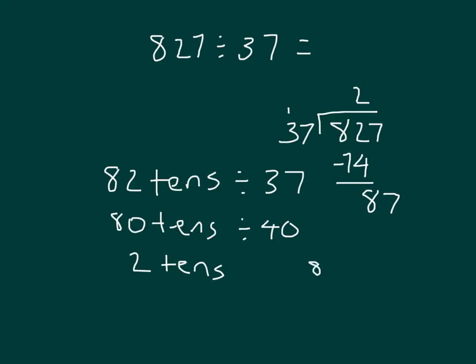So we're going 87 ones divided by 37, and again we can use an estimate to help us figure out how many times 37 goes into those 87 ones. In this case it's 80 ones, and then 80 divided by 40 still is 2, so that would be 2 ones, and that's why that 2 goes directly above the ones place.